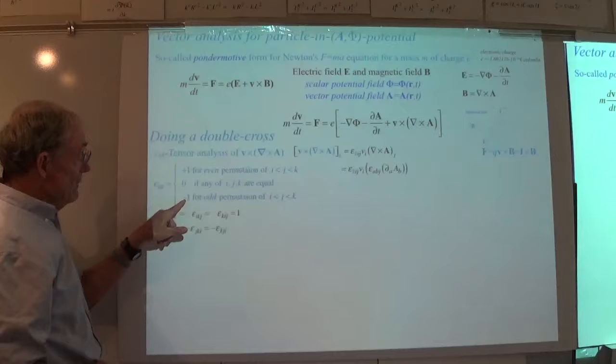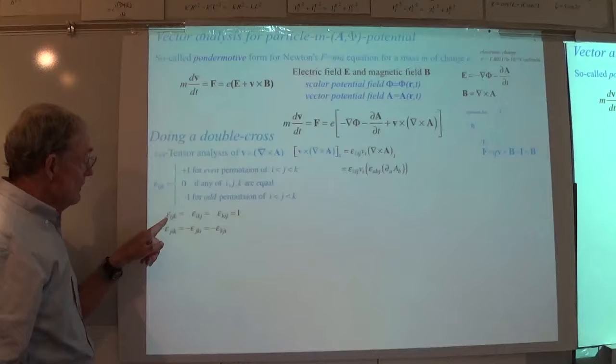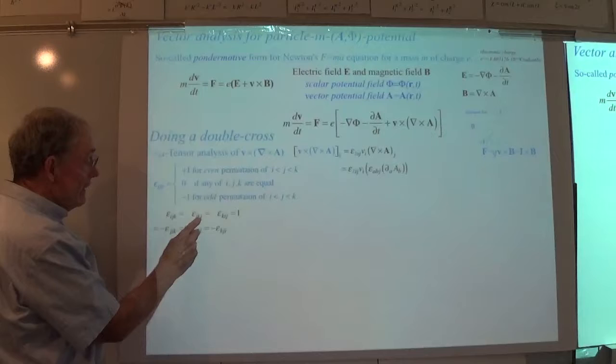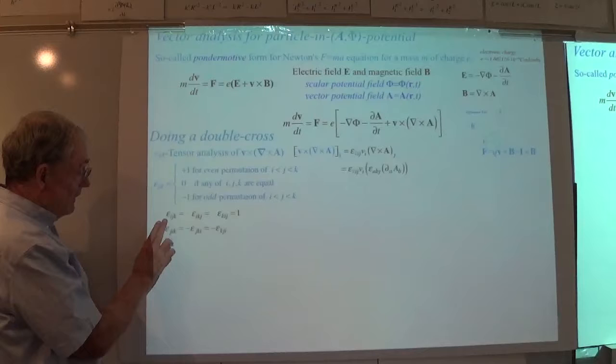Basically it's permutations of the number of dimensions — in this case three dimensions, so six positions of the indices. It can be plus one, minus one, or most likely zero. If I have i, j, and k in alphabetical order and cycle them along, I maintain the value. But if I flip a pair like i, j to j, i, I pick up a minus sign.